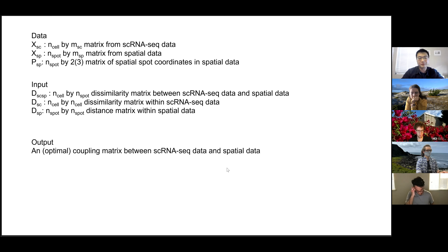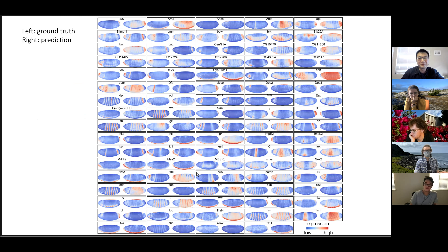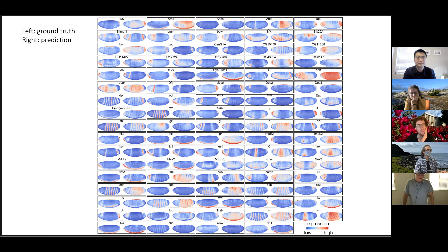Once we get the optimal coupling matrix, if we normalize it along the rows and multiply it with the single-cell gene expression matrix, we can readily predict all genes from the single-cell data now projected into space. We can do cross-validation within the spatial data, using single-cell data to predict spatial expressions as validation. This is a nice figure from the main paper — the bad ones are in the supplementary. For most genes it's qualitatively correct, though some are not quantitatively accurate.